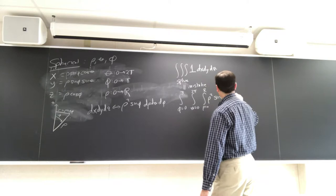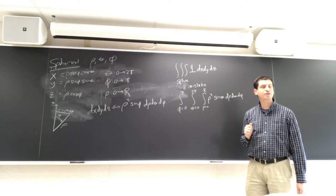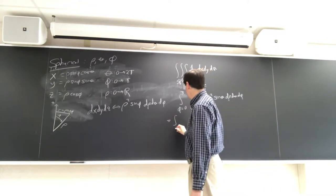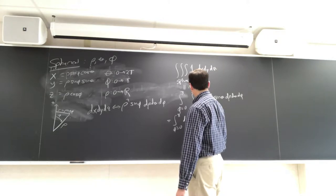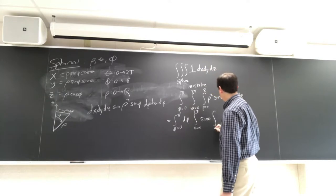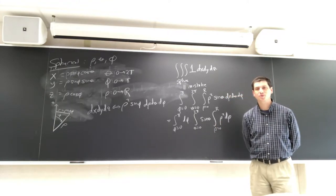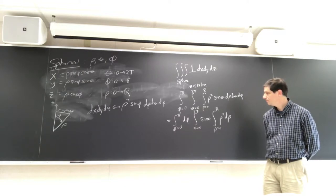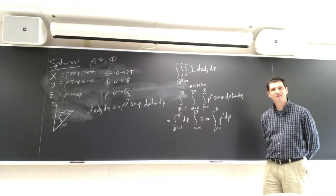With sine of θ incorrectly, we'd have φ from 0 to π, θ from 0 to 2π, ρ from 0 to r, with ρ² sine of θ dρ dθ dφ. The integral splits. The integral of sine of θ from 0 to 2π is zero. You get zero for the volume of a sphere. I've made a mistake — it's not sine of θ.